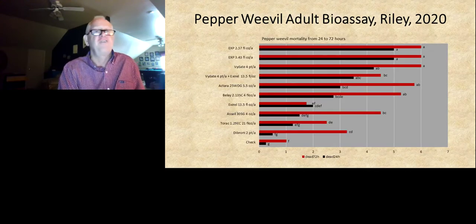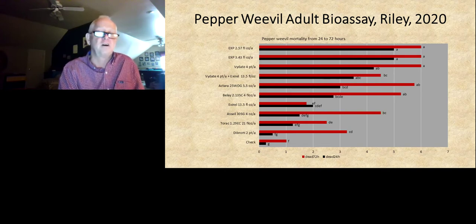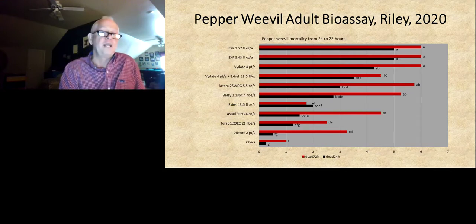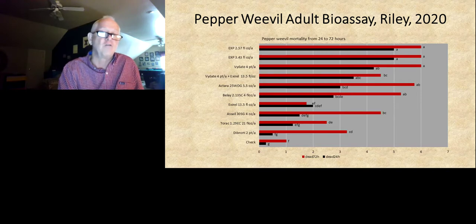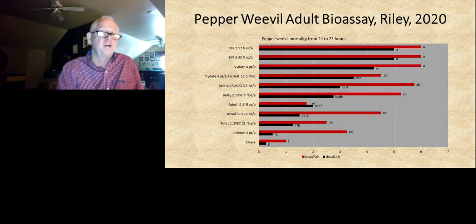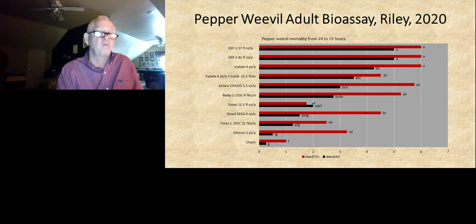As far as efficacy of insecticides against weevils, you can only kill adults because that's the only stage you can expose to insecticides. This is a bioassay that Dr. Riley conducted in 2020. The products we already know are good continue to perform well against weevil adults: Vydate, Ektara, Belay — which unfortunately is no longer labeled for us — and Assail. Those are the primary products we use for weevils. Exirel and Torac, which we work in generally in rotations, are not giving us the level of mortality you see with those other products, but they are impacting weevils in other ways, so they can continue to be used in rotations.